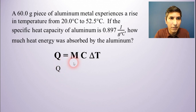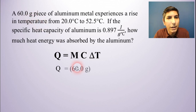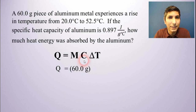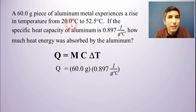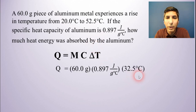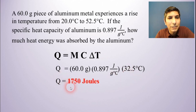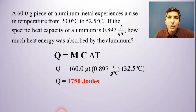M represents the mass of the aluminum, and the mass is 60.0 grams, so I plug that in for M. C is the specific heat capacity, and the problem tells us that value is 0.897 joules per gram degree Celsius, so that goes in for C. Delta T is the change in temperature — since it went from 20 degrees Celsius to 52.5 degrees Celsius, that's a rise of 32.5 degrees Celsius. I just multiply and solve for Q, and I get an answer of about 1,750 joules.